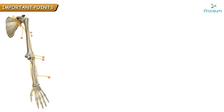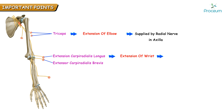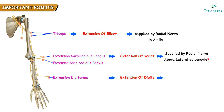To summarize the motor supply levels: most of the triceps, helping in elbow extension, is mainly supplied when the radial nerve is still in the axilla. The muscles extensor carpi radialis longus and part of extensor carpi radialis brevis, helping in wrist extension, are supplied when the radial nerve is above the lateral epicondyle. Extensor digitorum, helping in extension of the fingers, is supplied by the posterior interosseous nerve.